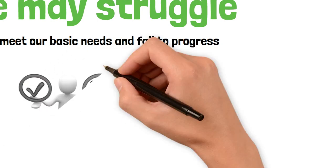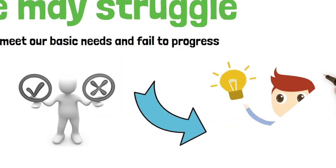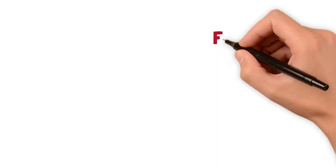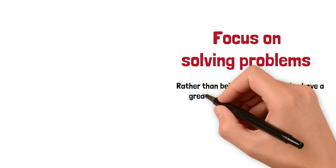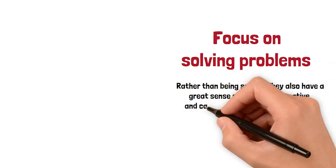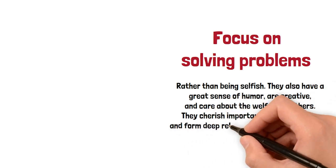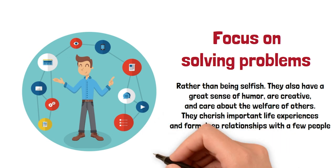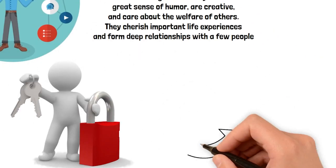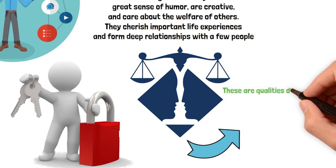Self-actualized people have some special traits. They see reality clearly and handle uncertainty well. They accept themselves and others as they are, are spontaneous, and focus on solving problems rather than being selfish. They also have a great sense of humor, creative, and care about the welfare of others. They cherish important life experiences and form deep relationships with a few people. They have peak experiences that are special to them. They value privacy, believe in democracy, and have strong moral standards. These are the qualities of successful people, often leaders in organizations and businesses.